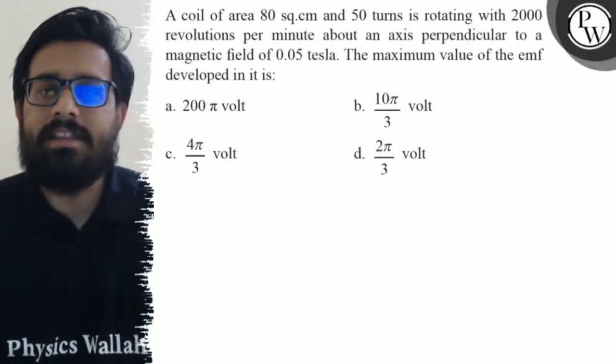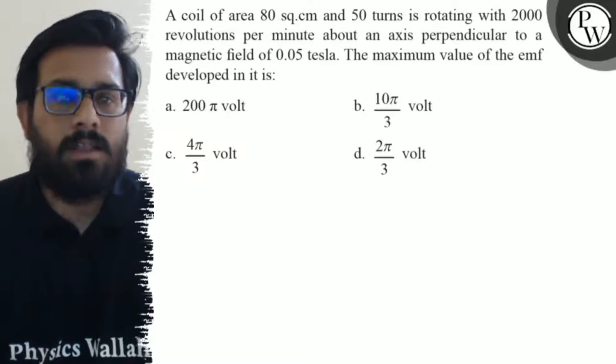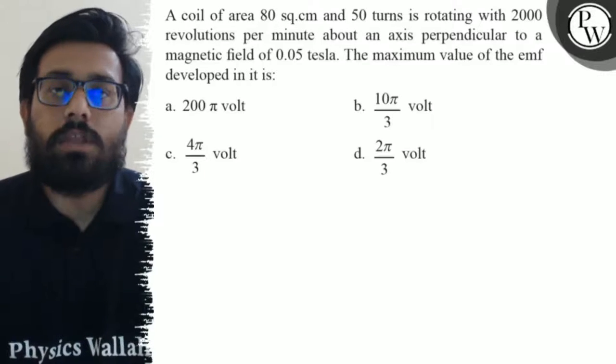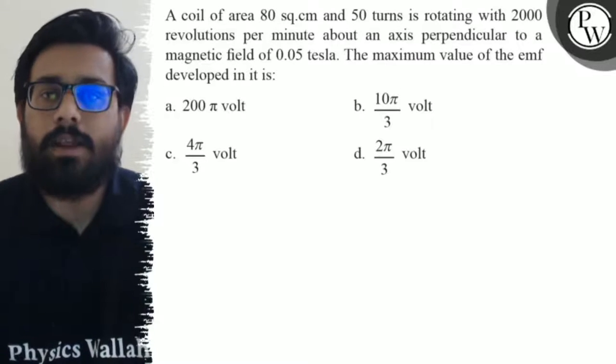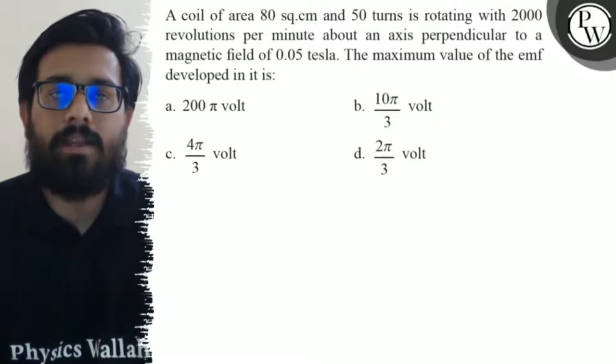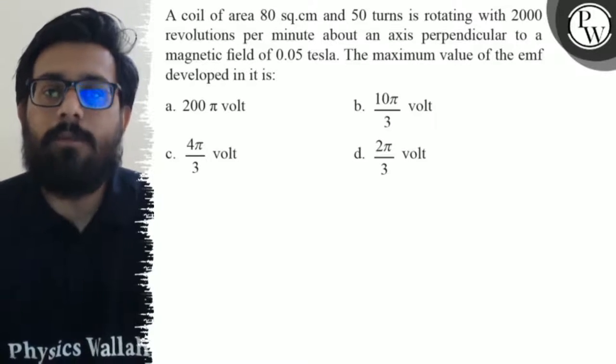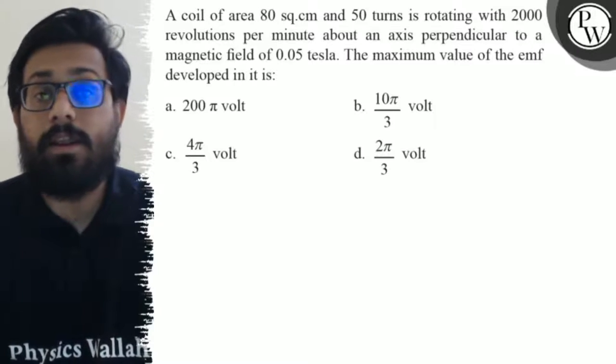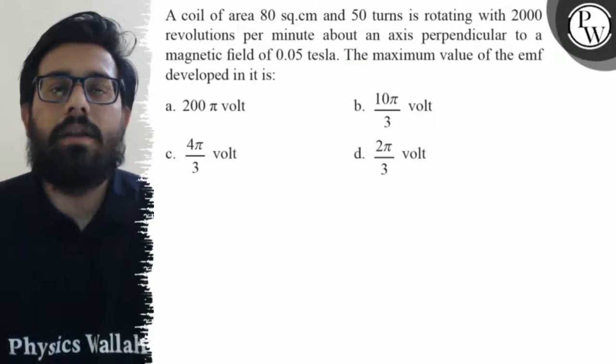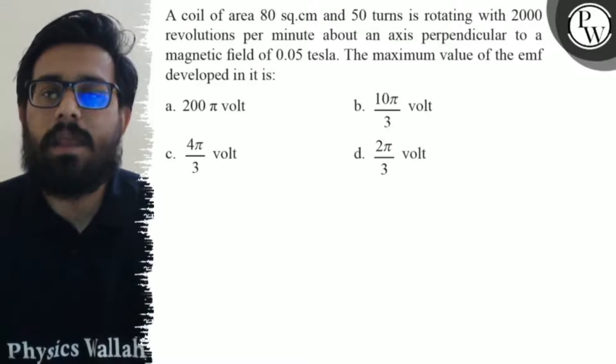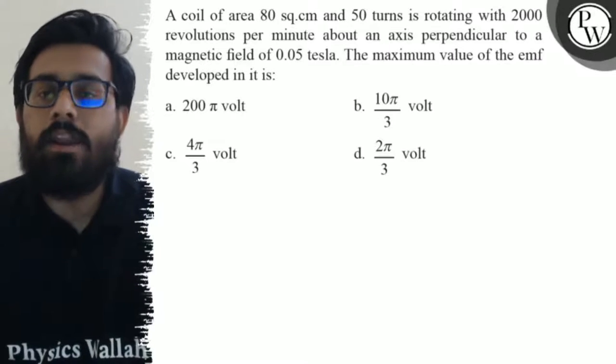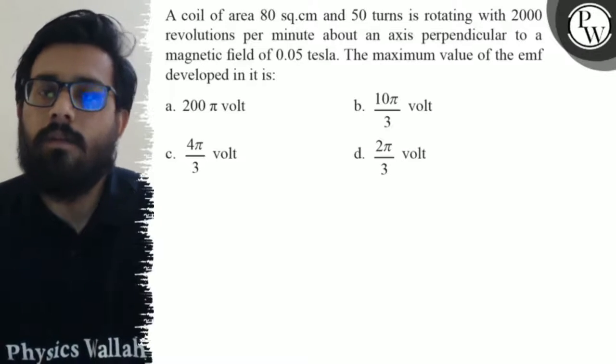A coil of area 80 centimeter square and 50 turns is rotating with 2000 revolutions per minute about an axis perpendicular to a magnetic field of 0.05 tesla. The maximum value of the EMF developed in it is: first option is 200π volt, second option is 10π/3 volt, third option is 4π/3 volt, and fourth option is 2π/3 volt.